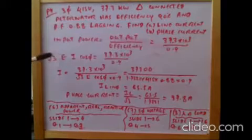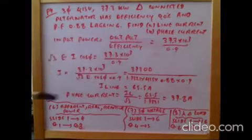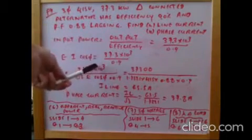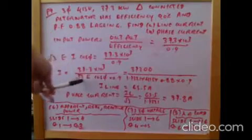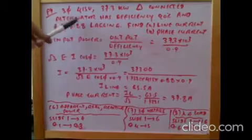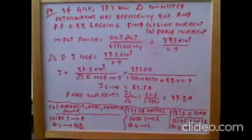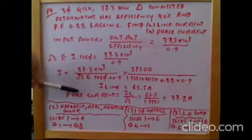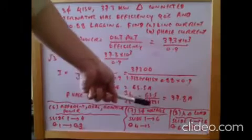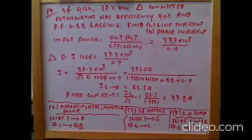Input power equals root 3 times E times I times cos φ. Rearranging for I: power divided by (root 3 × E × cos φ). Substituting: power is 37.3 × 10³, root 3 is 1.732, E is 415 V, and power factor is 0.9. The line current is 65.5 A. For the delta connection, phase current equals line current divided by root 3: 65.5 / 1.732 = 37.8 A.